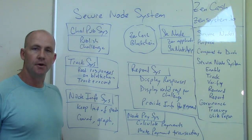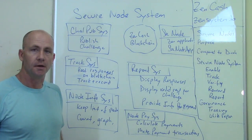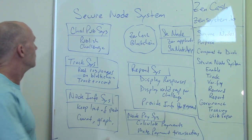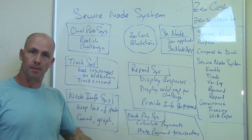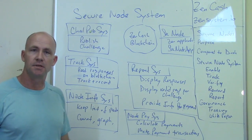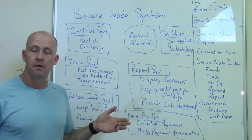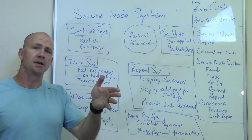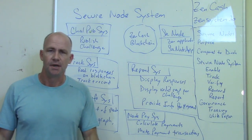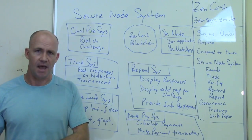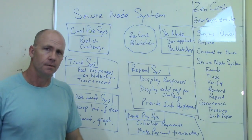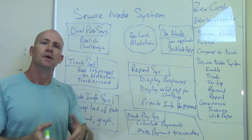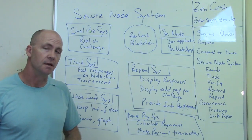Let's talk about the different elements of the secure node tracking and payment system and how they work together. The challenge publishing system is going to publish a challenge. The system will find a transaction somewhere in the entire Zen blockchain, come up with a transaction number, and publish that transaction number. Part of the required response is to find the first Zen address in that transaction.